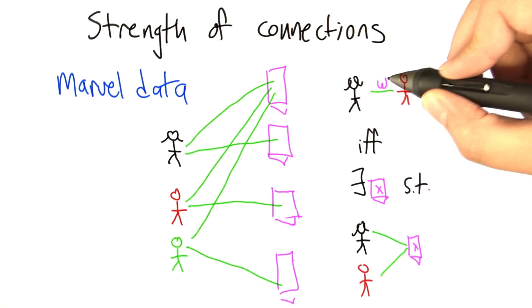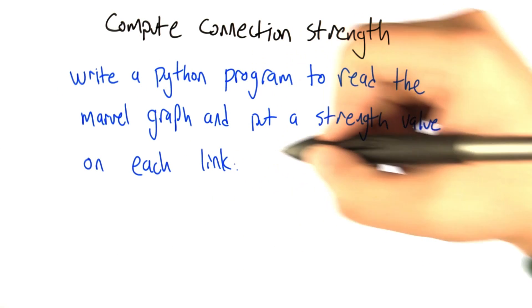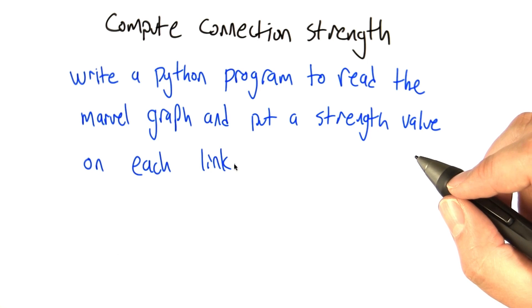What we'd like to do is put a weight on this edge, where the weight equals the number of books they co-appear in. So what you need to do is compute connection strength. Write a Python program to read the Marvel graph and put a strength value on each link.